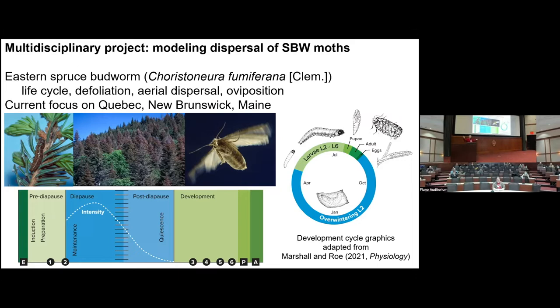The females drop half of their eggs where they grew up and then carry the other half to who knows where, and the idea of this project was to figure out possibly where they went. Their dispersal as adults is driven almost entirely by the weather — their entire biological process is driven by temperature, and their flight capability is driven by temperature in coordination with wind direction, wind speed, and other factors. That full biological process covers approximately a year for each generation.